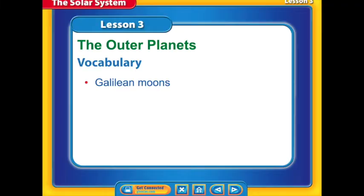I'd like for you to open up your science books to page 122 and download and have in front of you 102 of your notes on lesson three, the outer planets. Let's look at our vocabulary for lesson three. We just simply have one vocabulary word that we will need to know, and it's called the Galilean moons. We'll talk about that here a little bit later on.